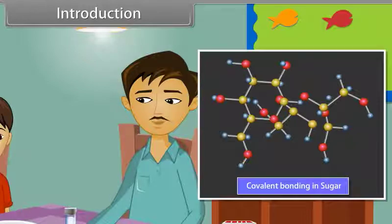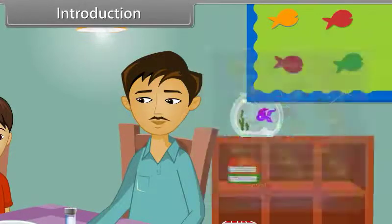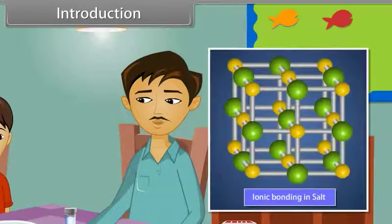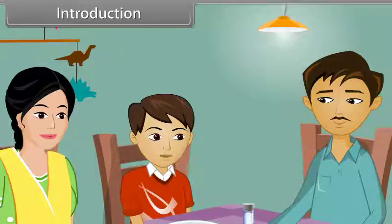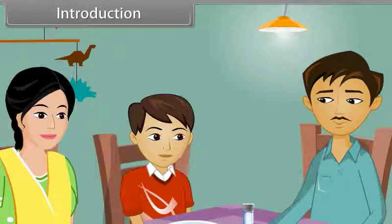In sugar, there is covalent bonding in the molecules, whereas in salt, there is ionic bonding in the molecules. Okay, Father. I got the reason and I want to know some more about that. Students, today we will study more about the chemical bonding and molecular structure.